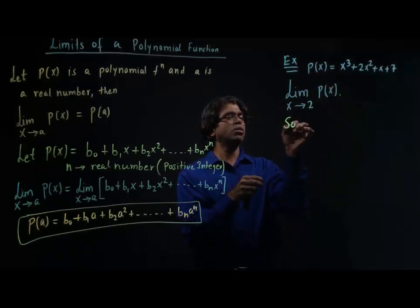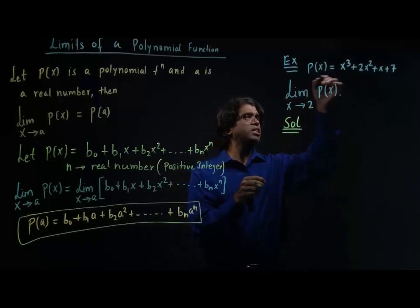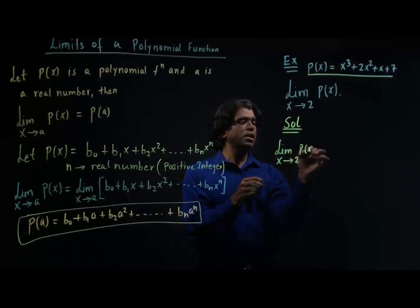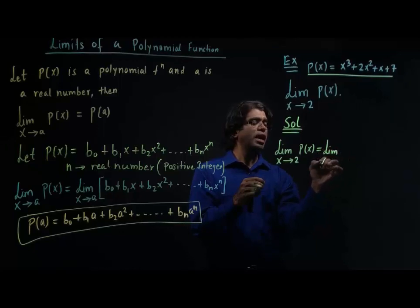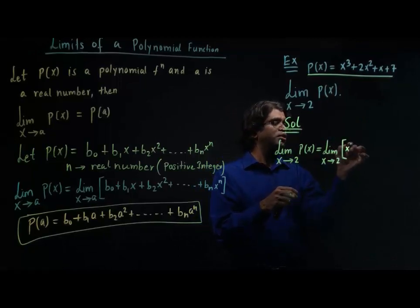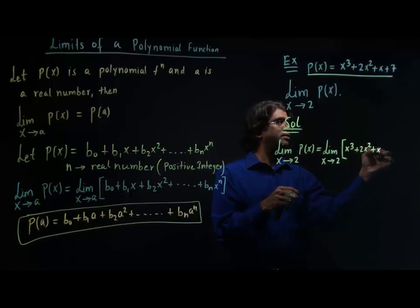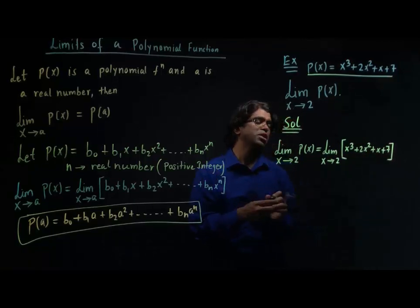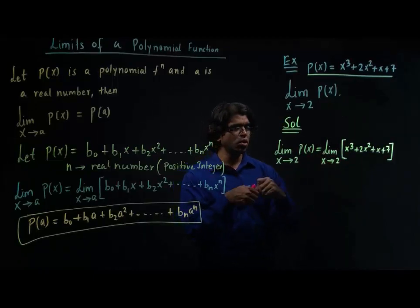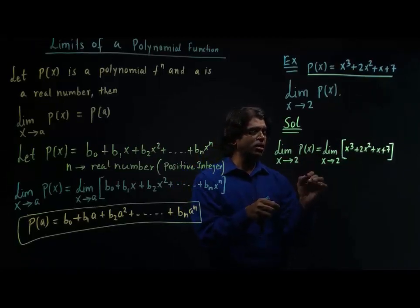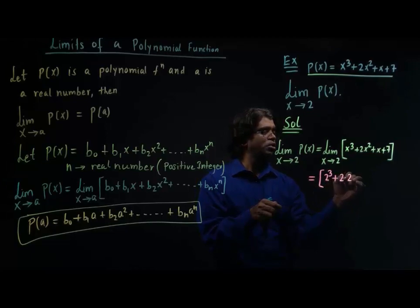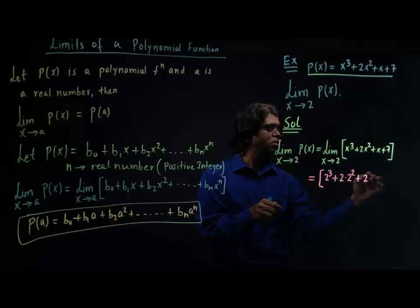Now let's find the limit of this polynomial function. I'm going to write: limit x tends to 2 of p(x) equals limit x tends to 2 of x cubed plus 2x squared plus x plus 7. The way I'm going to find this limit is by replacing x by 2. So this equals 2 cubed plus 2 times 2 squared plus 2 plus 7.